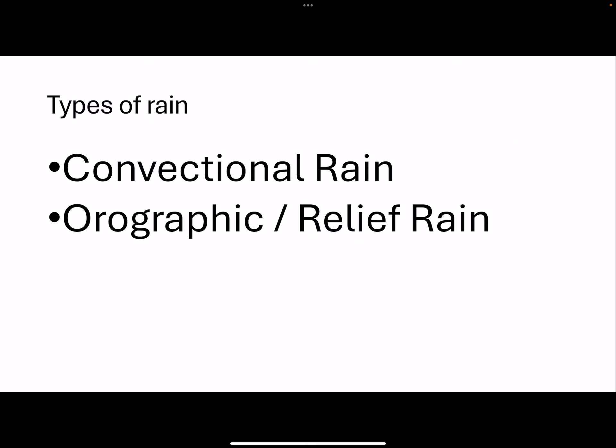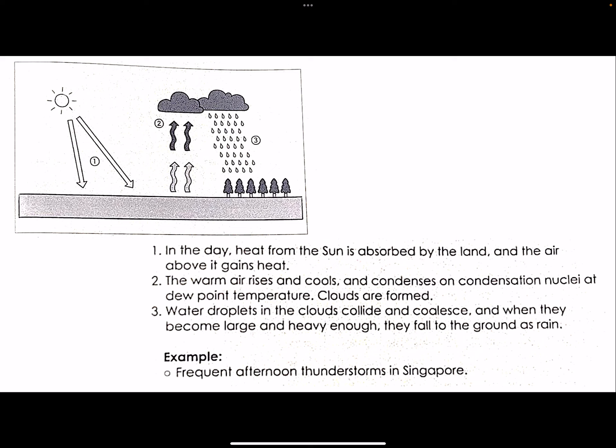The context is these two things — you must know what conventional rain and relief rain are. What are the conditions that must be in place for these two types of rain to occur? What do they look like and what is the impact on the area they affect? Conventional rain is everywhere — this non-color image is from the textbook. Your syllabus only has two types of rain, so any cloud formation and rainfall question will be conventional or relief rain.